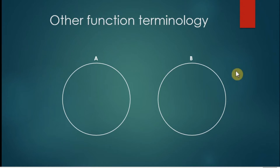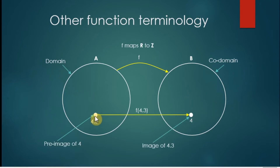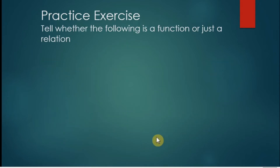Here is some function terminology. You have two sets: the first is called the domain, the second is called the codomain. The image of 4.3 is 4, and the pre-image of 4 is 4.3.